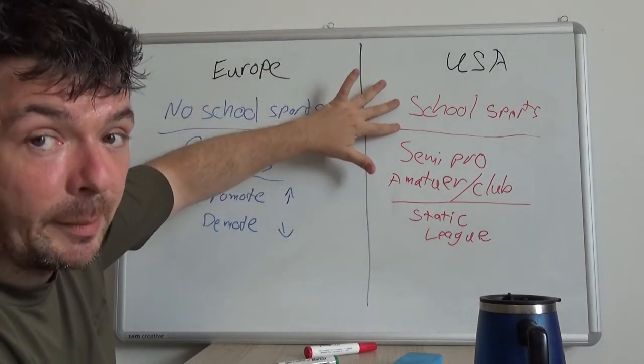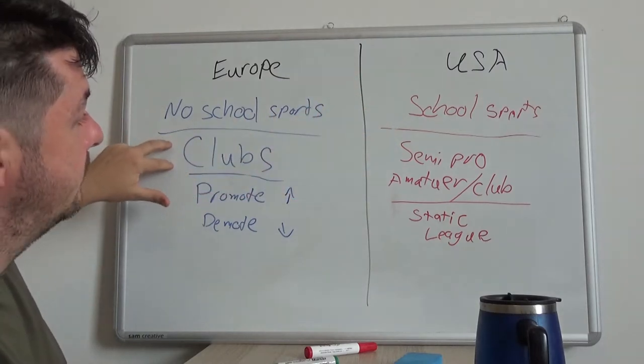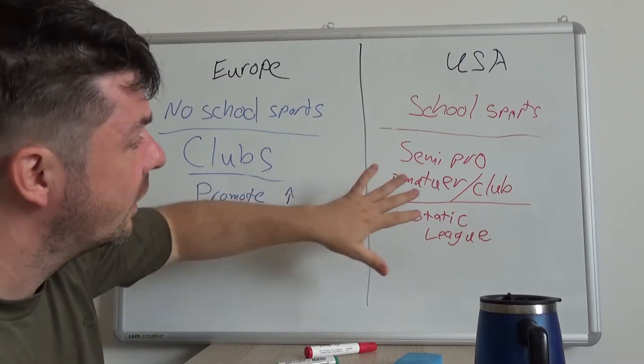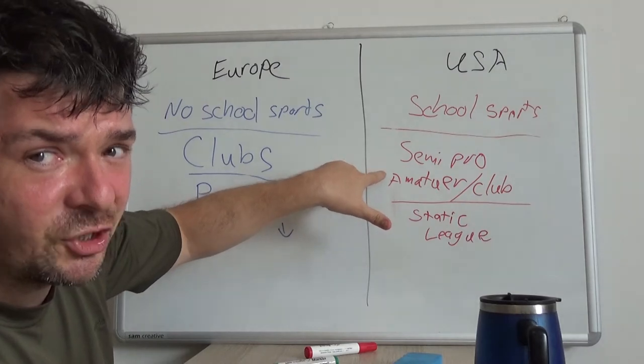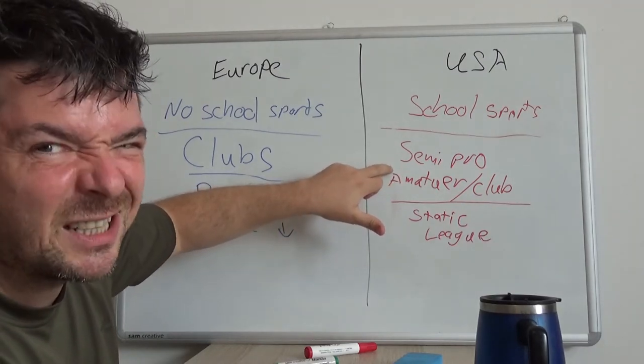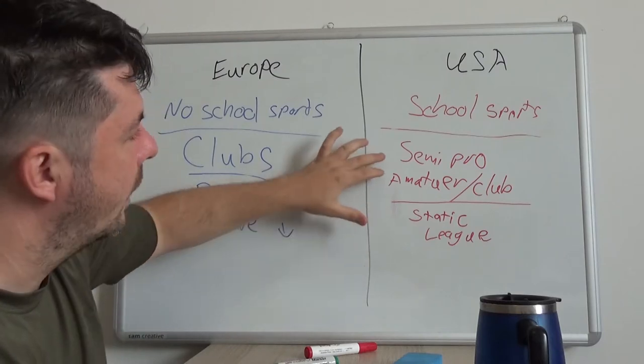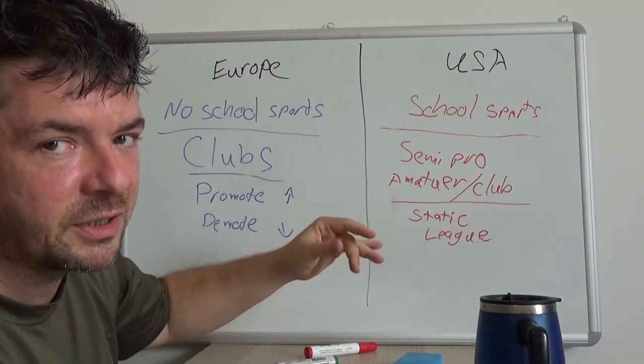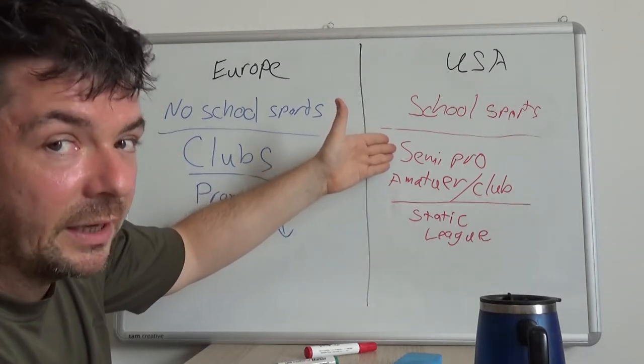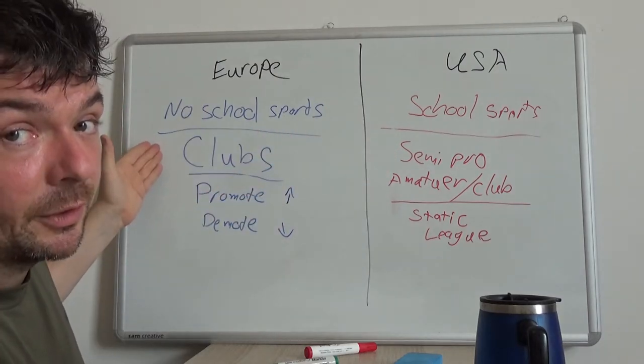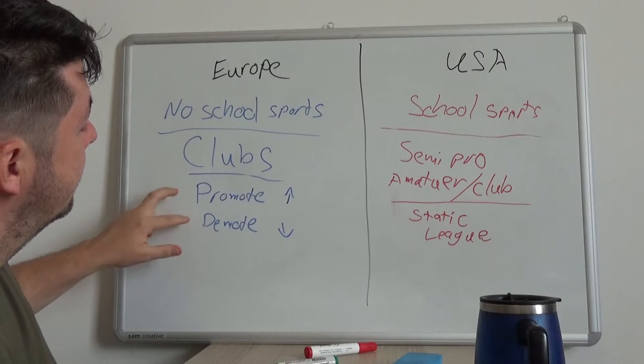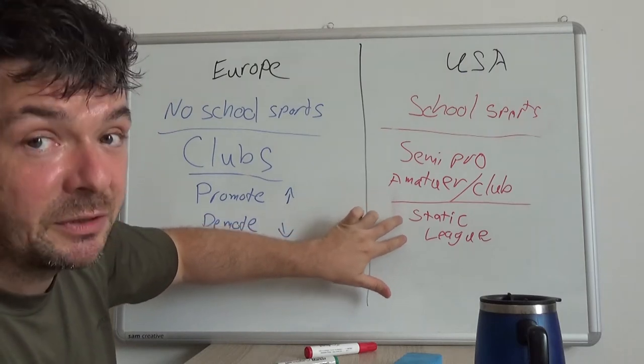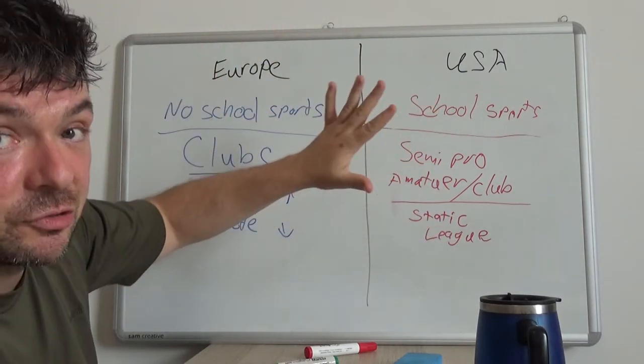There are no school sports here in Europe. Schools have pretty much the domination of sports in the United States. Here they have clubs. The United States has semi-pro American football, but most everything else is an amateur club or people just get together. They are roughly the same thing, just named differently. The main difference is this promotion demotion system. Over in the States, it was a very static league.